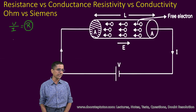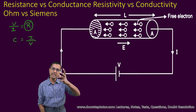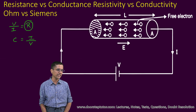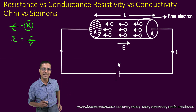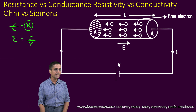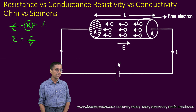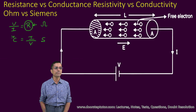If I invert this equation and come up with the formula I by V — I am just doing the reciprocal on both sides — this quantity is known as conductance C. Resistance R is given in units of Ohm. Conductance C is given in units of Siemens.